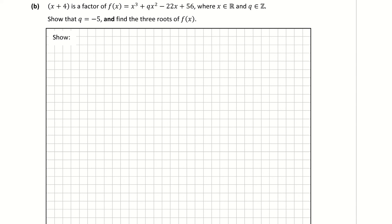There are a couple of different ways you can do this. In order to find the other roots, you can use long division. But what I'm going to do here is sub in my root. They've given us one of the factors: x plus 4. To turn that into a root, that's equal to 0, so one of my roots is x is equal to negative 4. That's my first root.